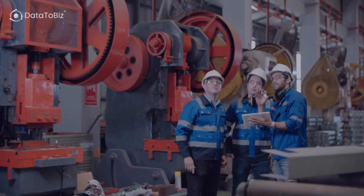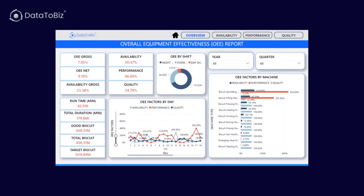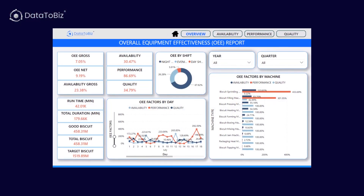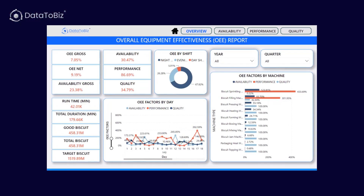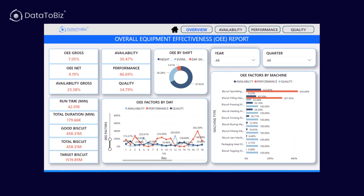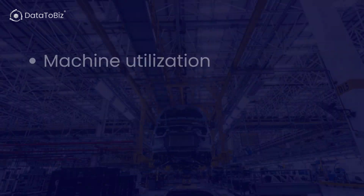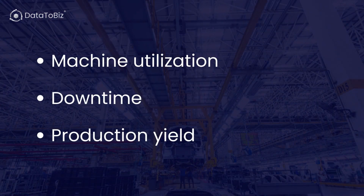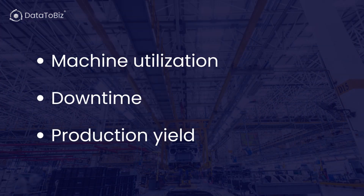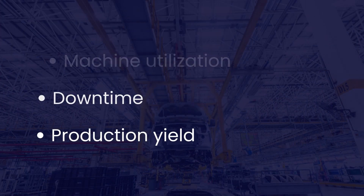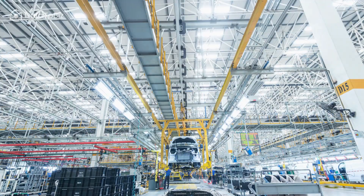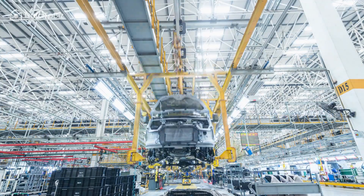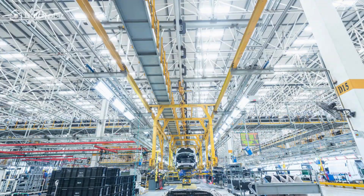With customizable reports displaying key performance indicators related to OEE tracking — such as machine utilization, downtime, and production yield — you can identify opportunities for improving production efficiency and profitability.